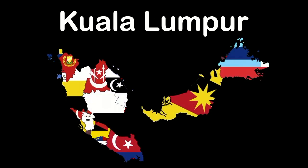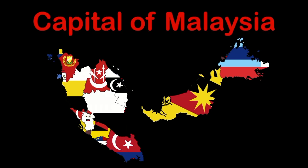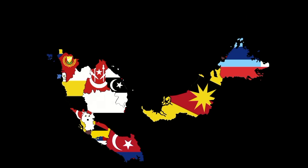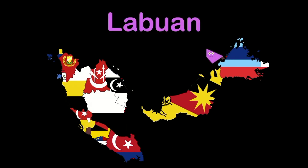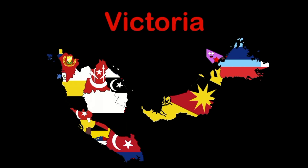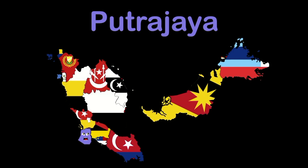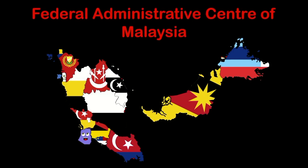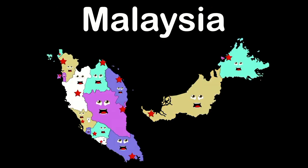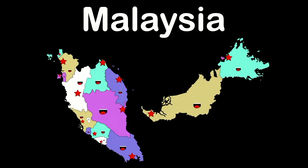I'm Kuala Lumpur, the capital of Malaysia — a federal territory and the largest city. I am Labuan — my capital's Victoria. I am a federal territory in Malaysia. I'm Putrajaya, a federal territory and the federal administrative center of Malaysia. We are Malaysia — a country in Southeast Asia, made of 13 states and 3 federal territories, with capitals in all.